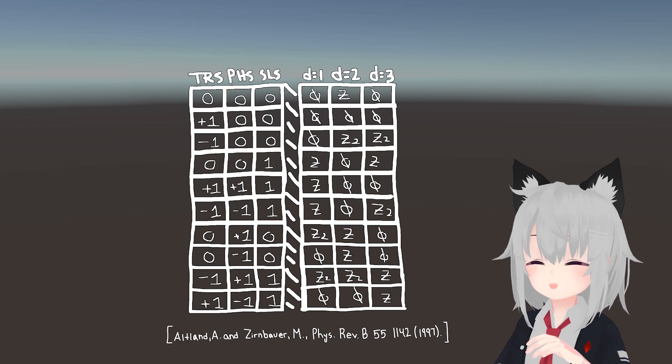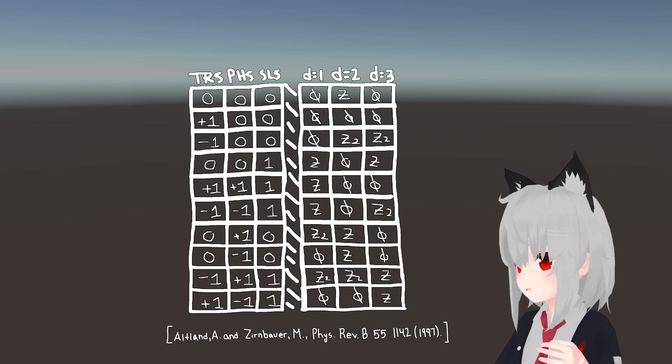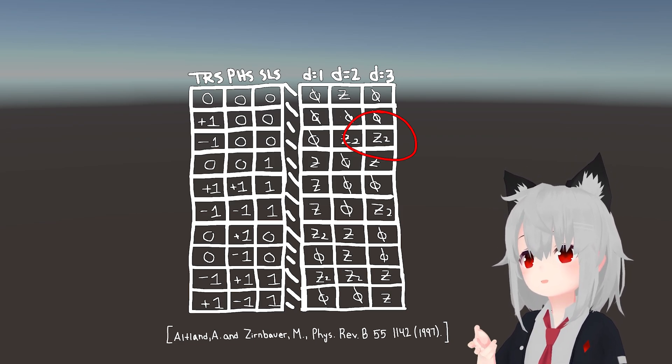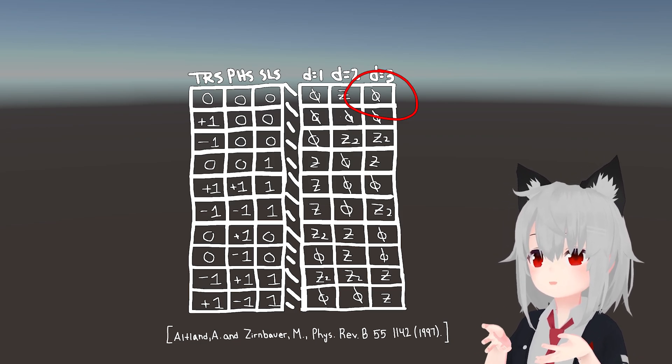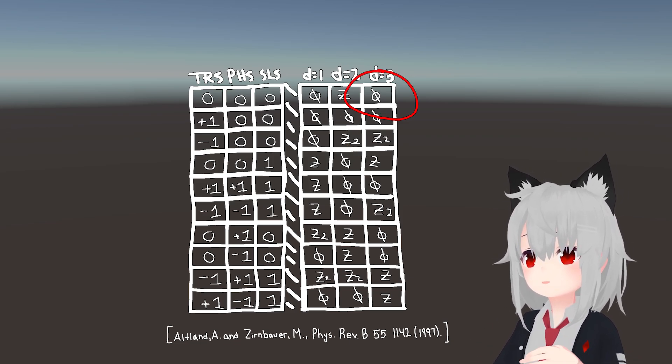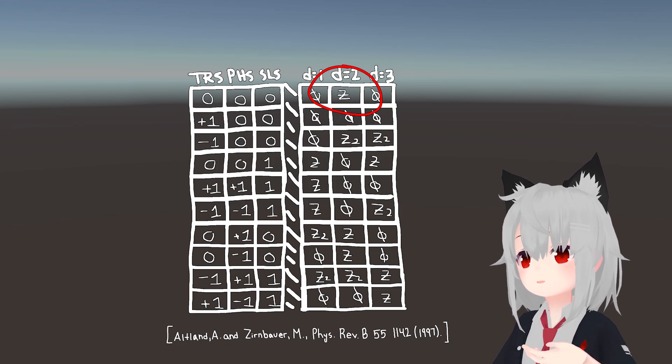With this, you can determine whether your topological invariant is an element of the set Z2, which is the integers mod 2, whether it's an element of the trivial set, which is basically just 0, or whether it's an element of the integers, as we saw in our first example.